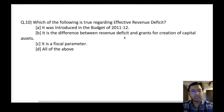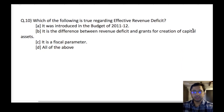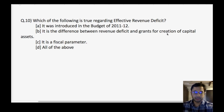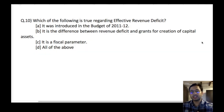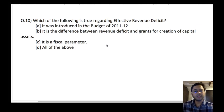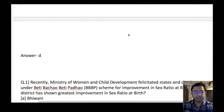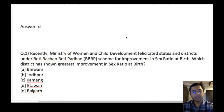Which of the following is true regarding effective revenue deficit? It was introduced in Budget 2011-12. It is the difference between revenue deficit and grants for creation of capital assets. It is a fiscal parameter. All of the above. Note: effective revenue deficit has now been removed from use under the budget for identifying different kinds of deficits. Therefore, because it has been removed, it might be asked in the examination. The answer is D — all of the above are correct.